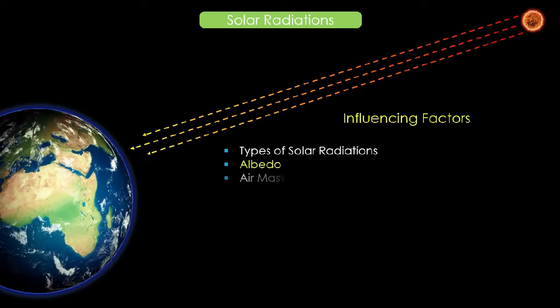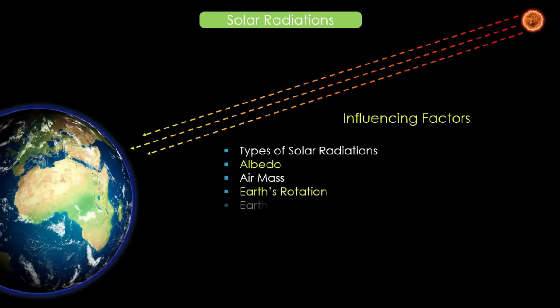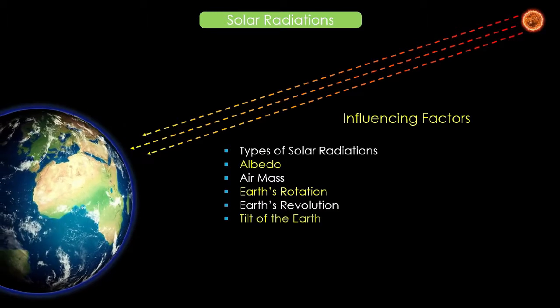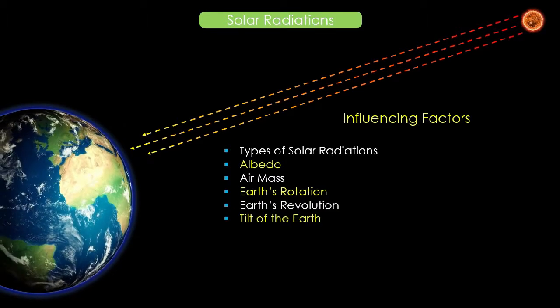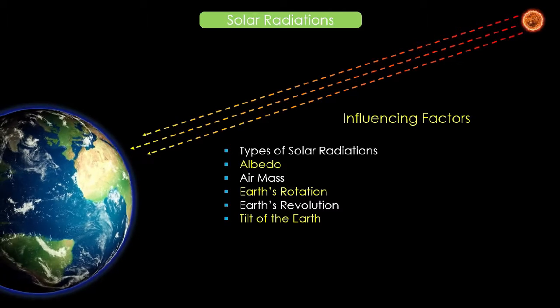The probable influencing factors are types of solar radiations, albedo of the earth, air mass, earth's rotation, earth's revolution, and tilt of the earth.